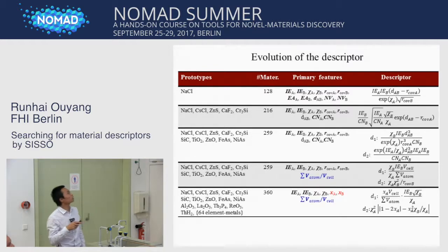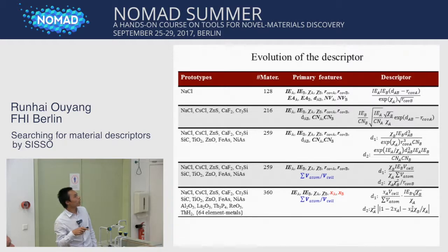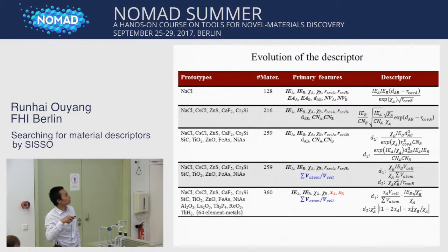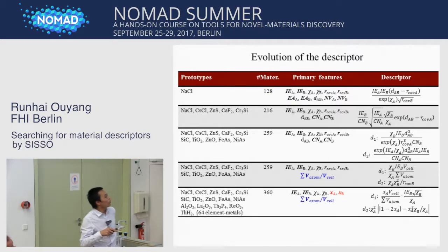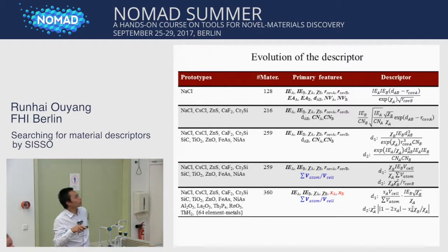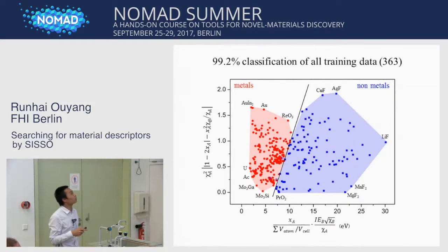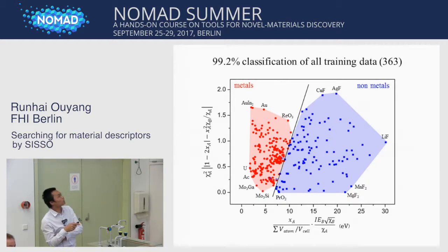Finally, we increase the number of prototypes up to 15 and include 64 elemental metals. Again we found the previous primary features cannot achieve full classification. We then realized that the atomic ratio is needed — for example, aluminum oxide is A2B3, Th3P4 is A3B4, and another compound is A1B3. After including the atomic ratios of A and B, we again find a descriptor that totally classifies all training materials. The best descriptor achieves 99.2% classification for all the training data.